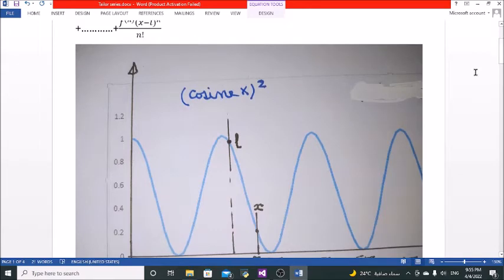For example, if we have a function f of x, let's say cosine x all squared, and we want to change it to a polynomial indexed function within a given range to find an expression for this curve.